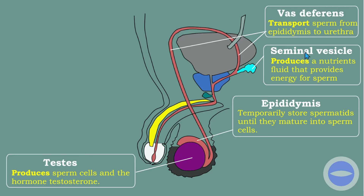Another part we will look at is the seminal vesicle. The seminal vesicle produces a nutrient fluid that provides energy for the sperm. As the sperm moves, the seminal vesicle adds nutrients in the form of semen. This semen provides energy for the sperm so that the sperm can live longer, because sperm is very sensitive and needs nutrients to survive a little bit longer.